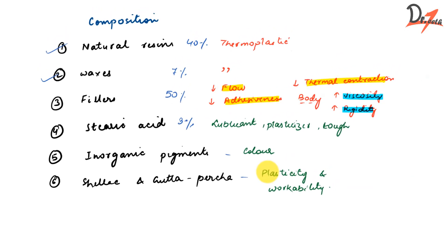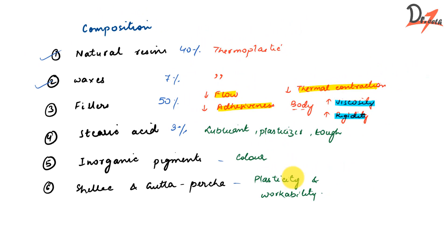To summarize the composition: the major components are resin and waxes, both making the compound thermoplastic. Fillers, at almost 50%, decrease flow, adhesiveness, and thermal contraction, and increase viscosity and rigidity. Stearic acid is a lubricant, plasticizer, and increases toughness. Inorganic pigments provide color, and shellac and gutta-percha provide plasticity and workability.